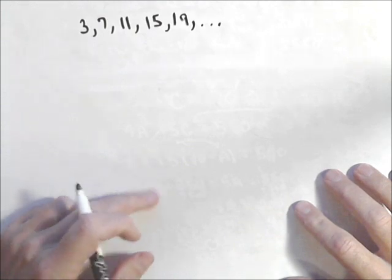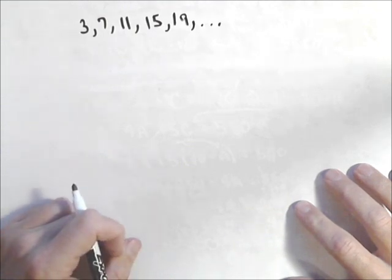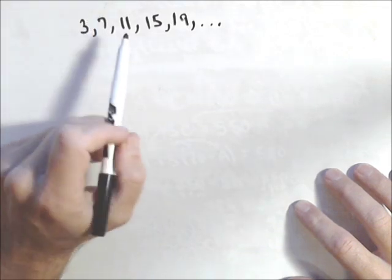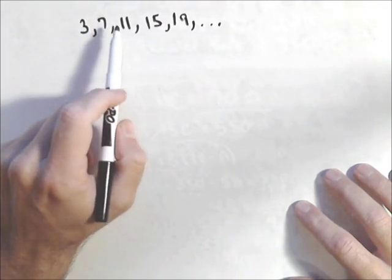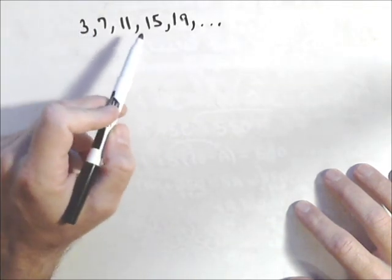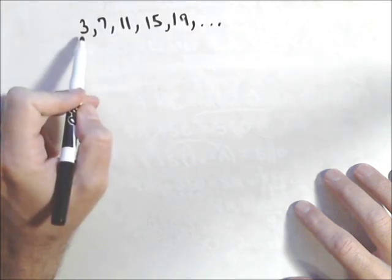In this video, we're going to discuss a couple approaches of finding an arithmetic sequence, the nth term. There's two pieces that make up an arithmetic sequence in general, and that's the common difference and the first term.